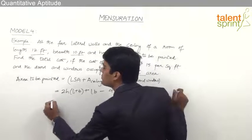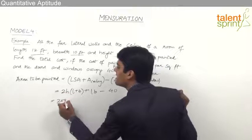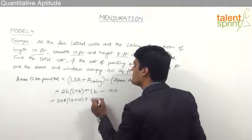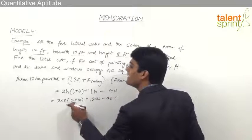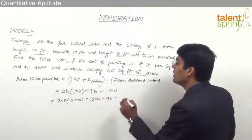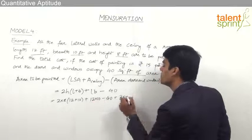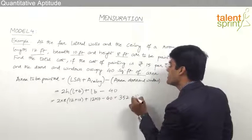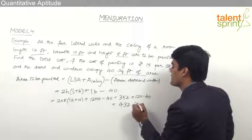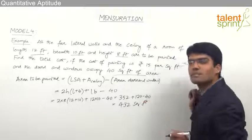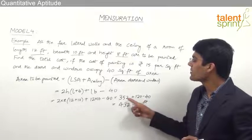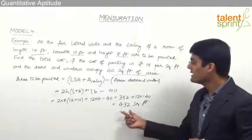Substituting the values: 2 × 8 × (12 + 10) + 12 × 10 − 40. This gives 16 × 22 + 120 − 40. 16 × 22 = 352. So 352 + 120 = 472, and 472 − 40 = 432 square feet. The area that has to be painted is 432 square feet.